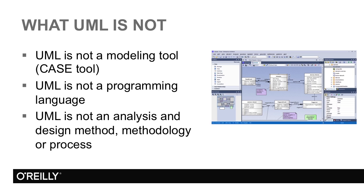And it's not an analysis and design methodology, method, or process. Knowing the notation of UML doesn't mean that you automatically understand how to use it to develop a software system as part of a system development project. Different types of systems in different contexts may require different approaches to the software development lifecycle. The three authors also launched the Unified Software Development Process, and there have been a number of evolutions of that, including some for more agile projects. The important thing to note is that you need to have a plan or method for how you'll use UML in a project.